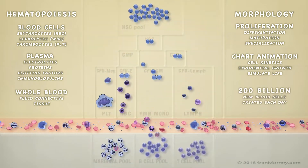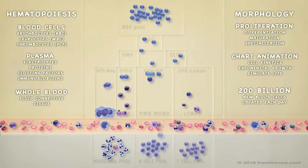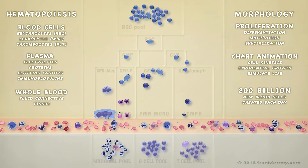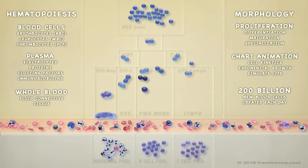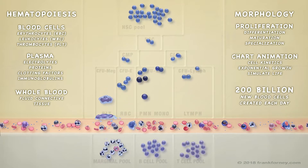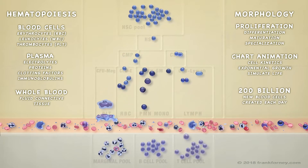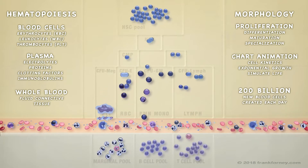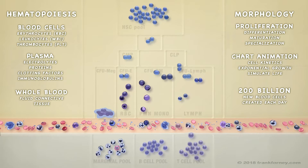In an average adult, the hematopoietic system creates 200 billion new blood cells each day.